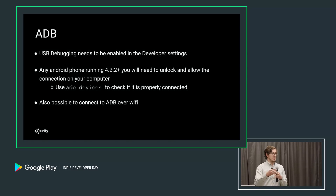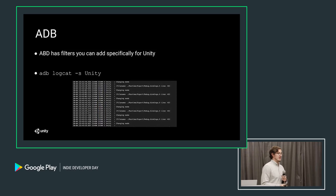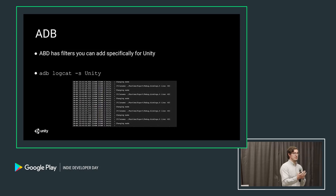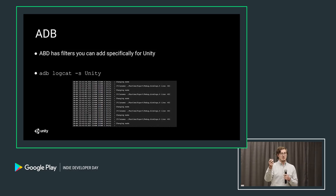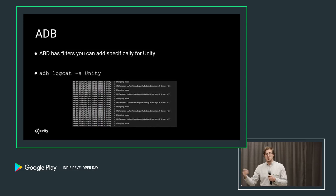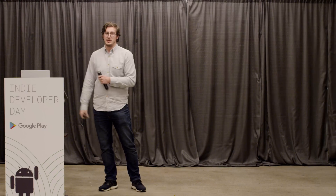ADB is also available via Wi-Fi, and you can do this via the connected editor within Unity's console window. There's actually a flag you can use — dash S Unity — which gives you specific callbacks from your app running in Unity. For example, every time I change the orientation from portrait to landscape, it outputs a debug message in the console, and you can see these callbacks through ADB as your phone is connected. It'll also output errors or null reference exceptions, so you can trace and understand where those issues are coming from.